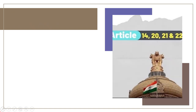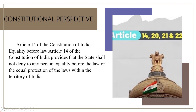Coming to the Constitutional Perspective: Articles 14, 20, 21 and 22. Article 14 of the Constitution of India, Equality Before Law, provides that the state shall not deny to any person equality before the law or the equal protection of the laws within the territory of India. The rule of equality is not absolute and there are several exceptions — for instance, foreign diplomats are immune from the jurisdiction of courts. Article 361 of the Indian Constitution offers immunity to the President of India and state governors, who are not answerable to any court for the exercise and performance of their powers and duties.